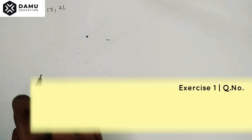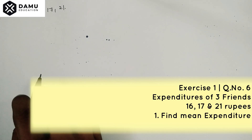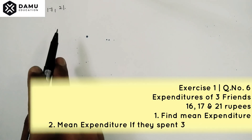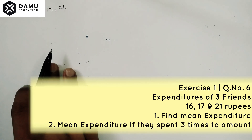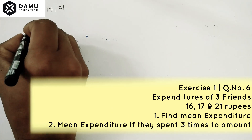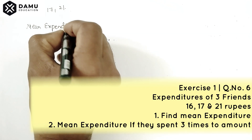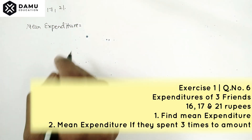Hello viewers, in this session we are going to discuss the solution for the sixth question. Here, three friends went to a hotel for breakfast and paid 16 rupees, 17 rupees, and 21 rupees respectively. Find the mean expenditure for them.